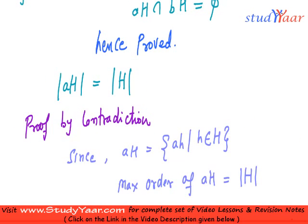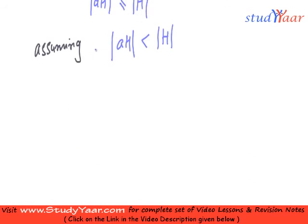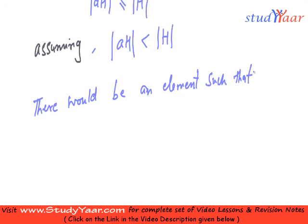And if it is equal, then effectively I have proved my property. So, that is what we are trying to do over here. So, assuming this is the case, then there would be an element such that A star H1 equals A star H2. In that case, the order is going to become less than the order of my subgroup.